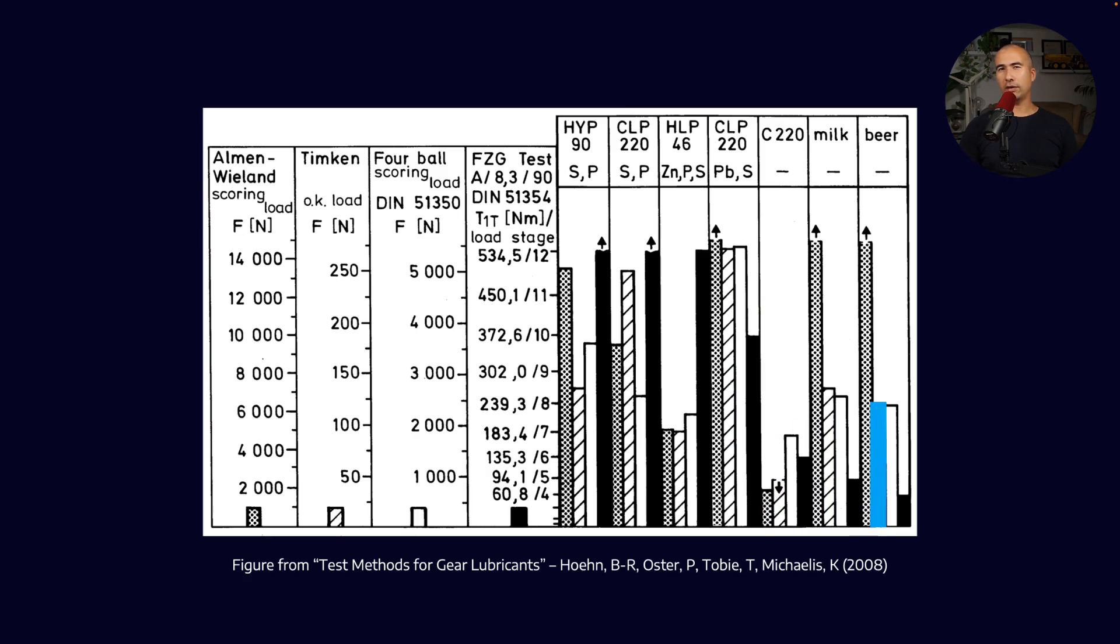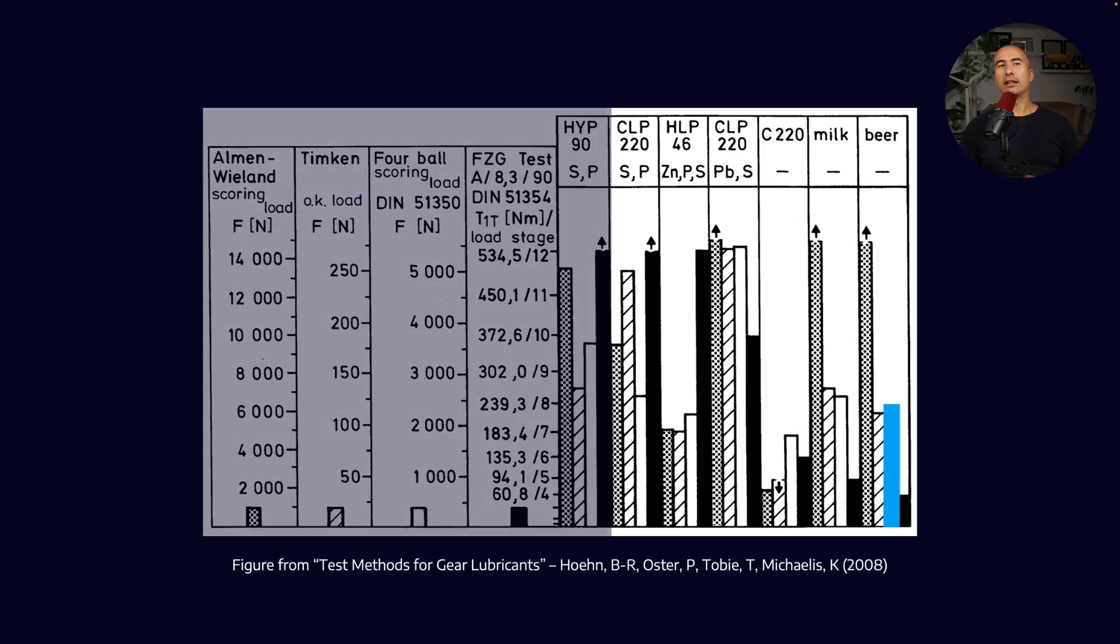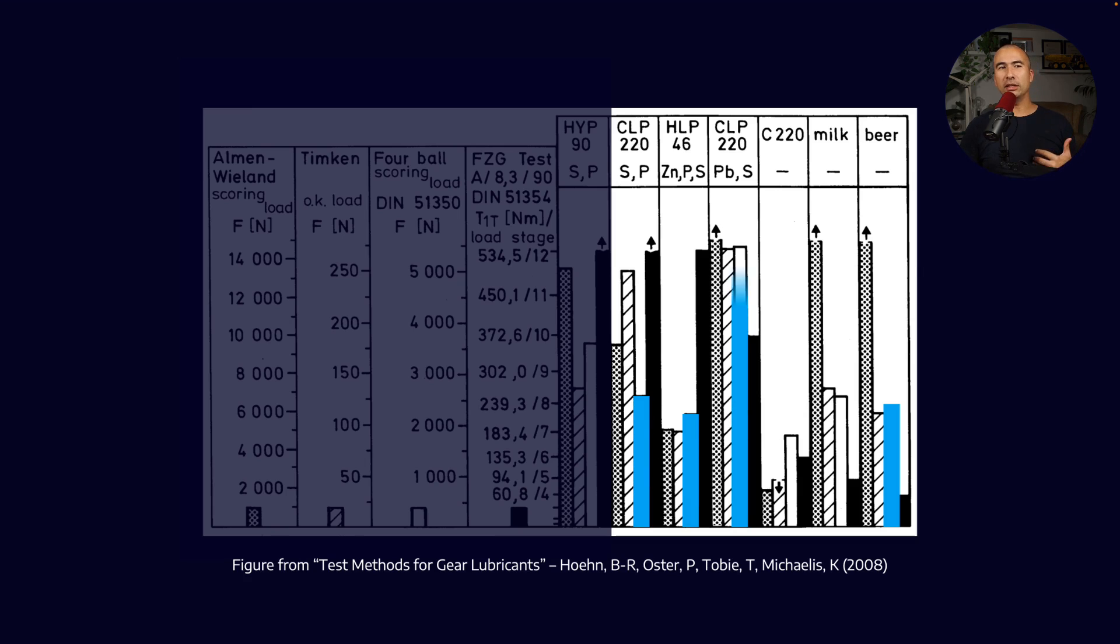And of course, milk and beer did not perform as well as their fully formulated counterparts. But this is where things get a little bit weird because when you look at the four ball performance of these products, right, the SAE 90 gear oil did pretty well.